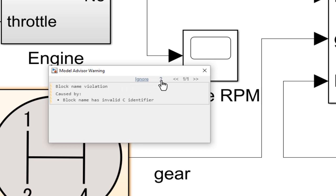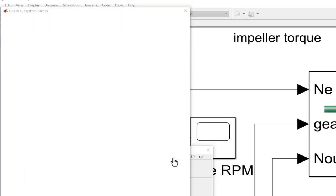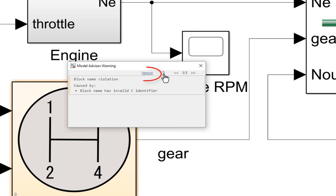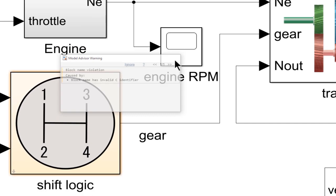You can also get detailed documentation on the guideline to explain the reason for the error. Since we are generating code with this model, we need to use a valid C identifier. You can exclude the error or simply undo the change to avoid the error altogether. Edit time checking identified the issue when it was entered to keep the design ready for code generation.